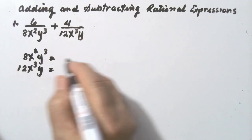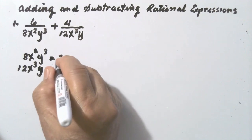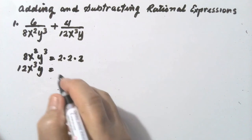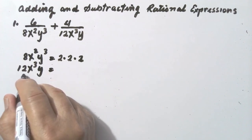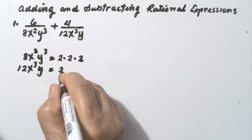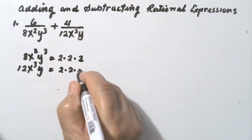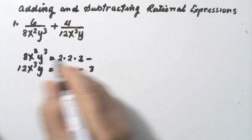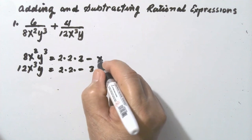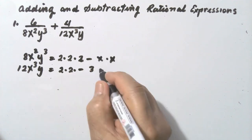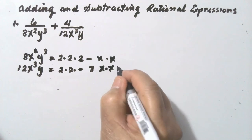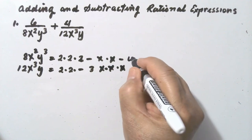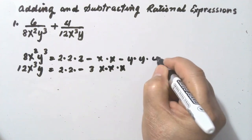Find the prime factors of 8: 2 times 2 times 2. And then the prime factors of 12: 2 times 2 times 3. Do not write 3 below 2 — they are not the same. Then go to x squared: x times x. Then x cubed: x times x times x. Then y cubed: y times y times y.